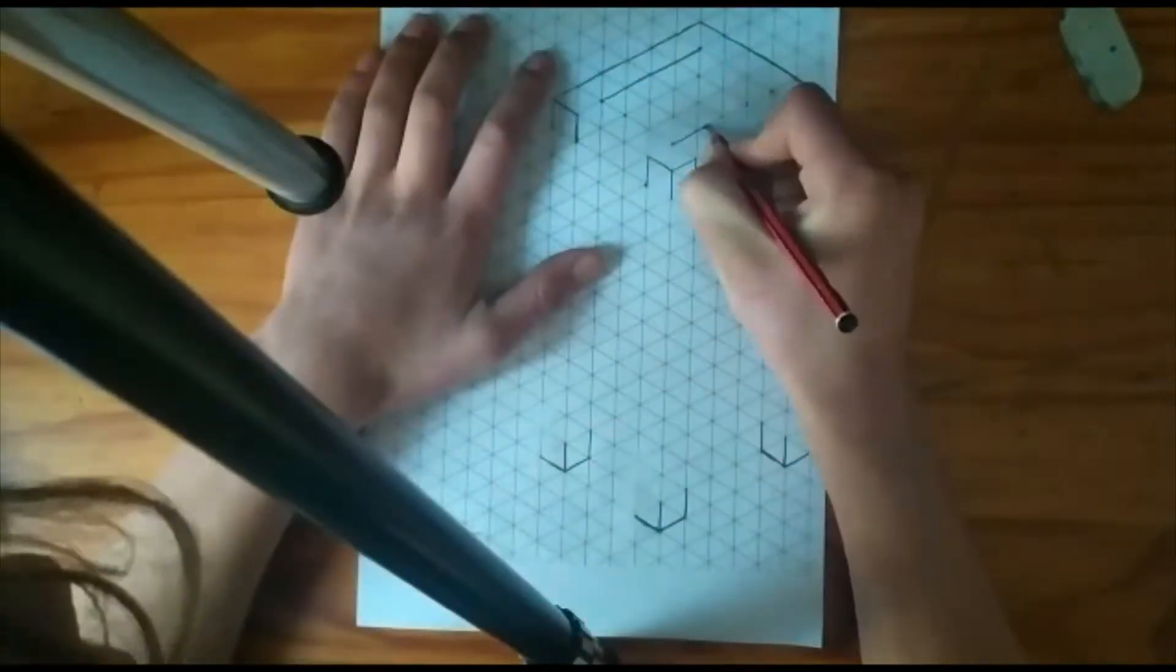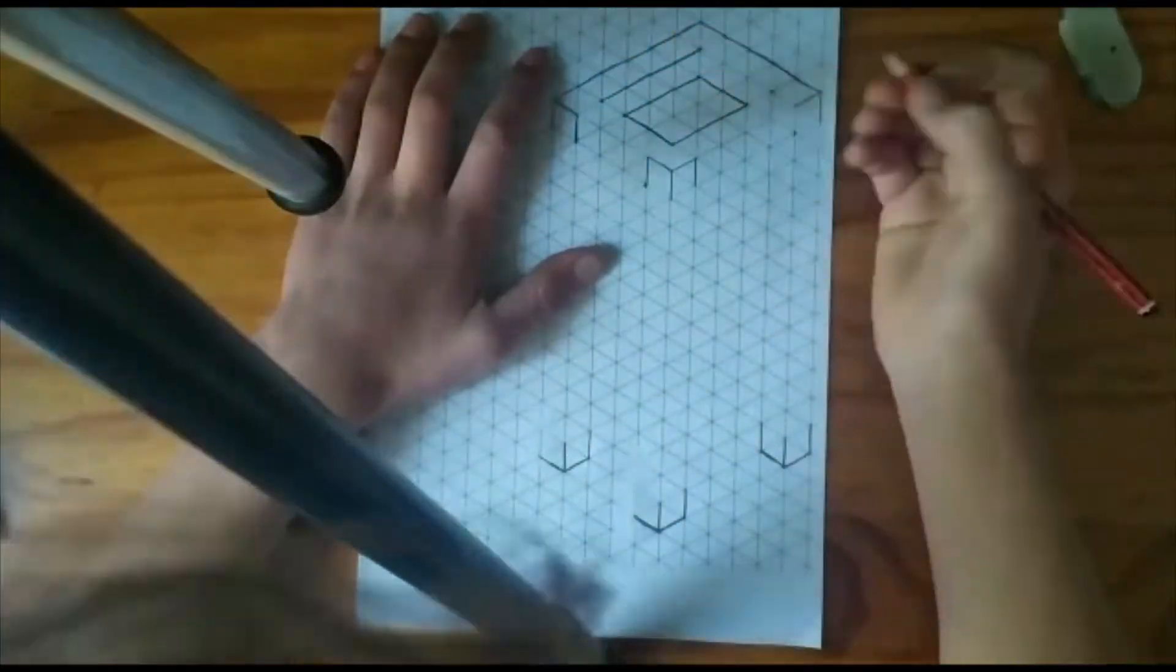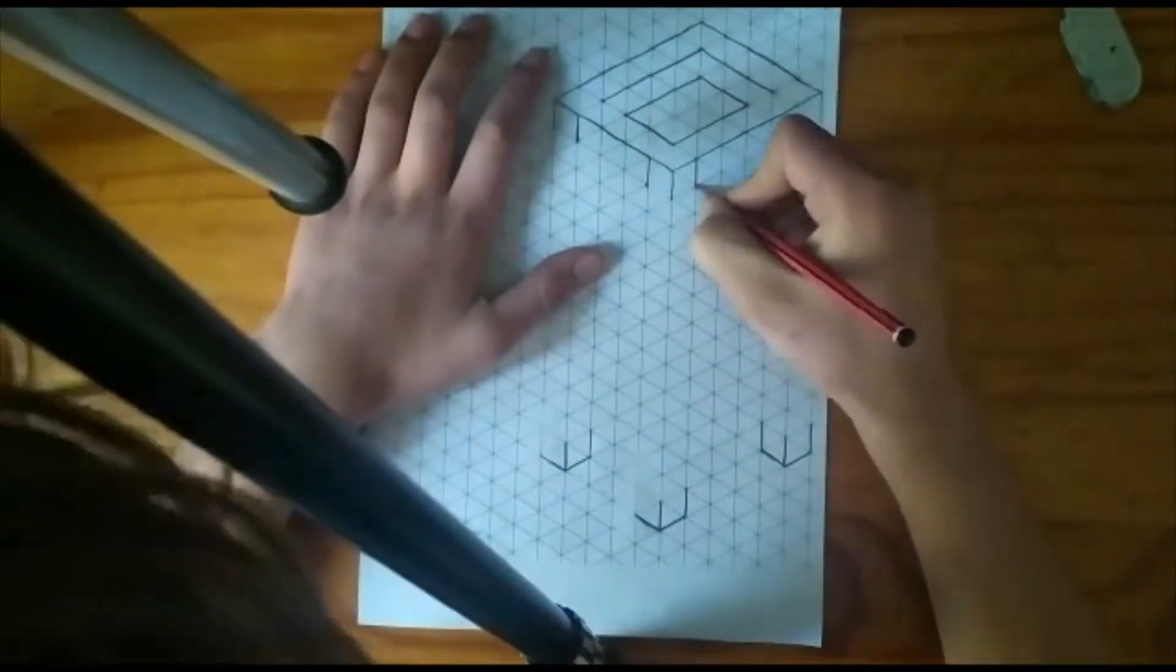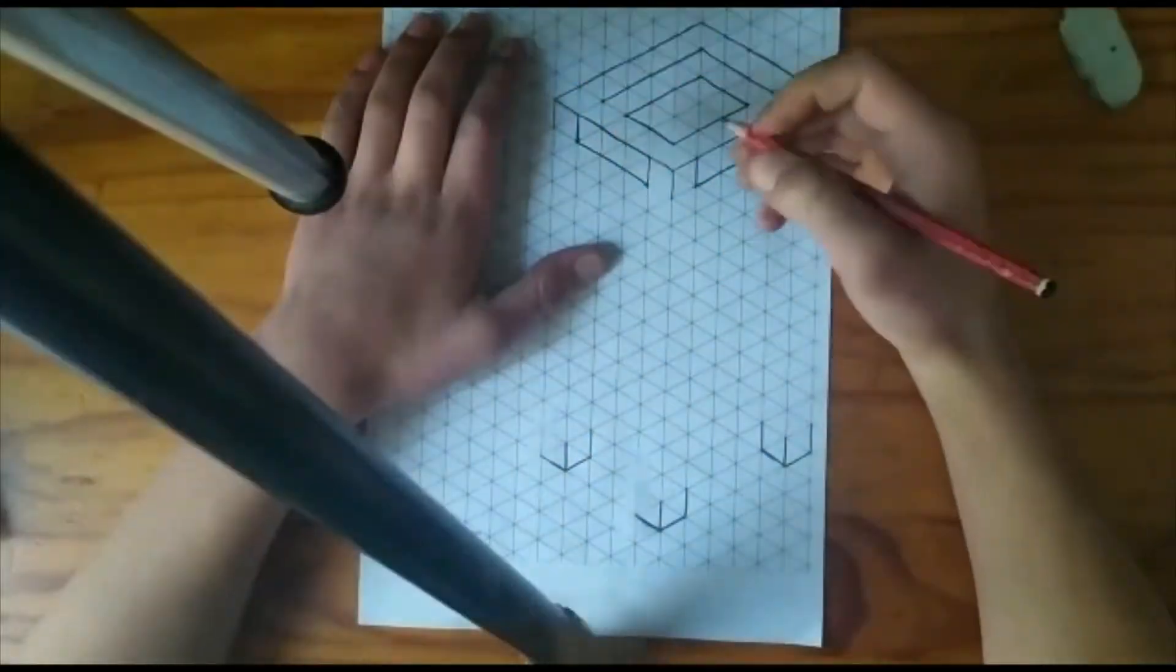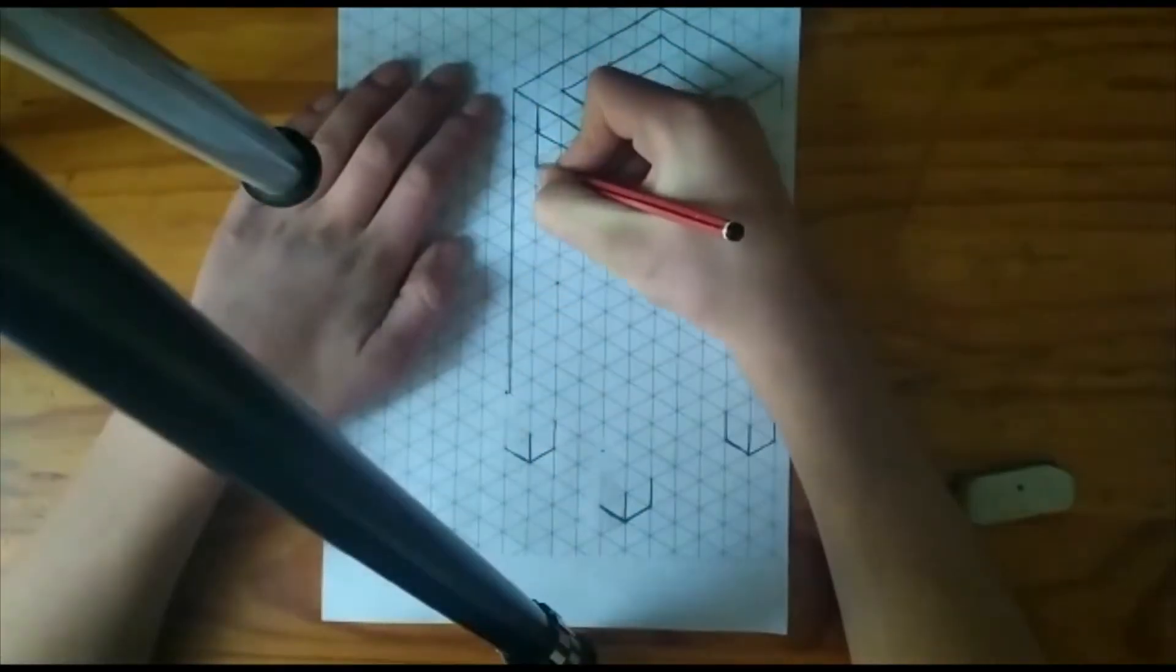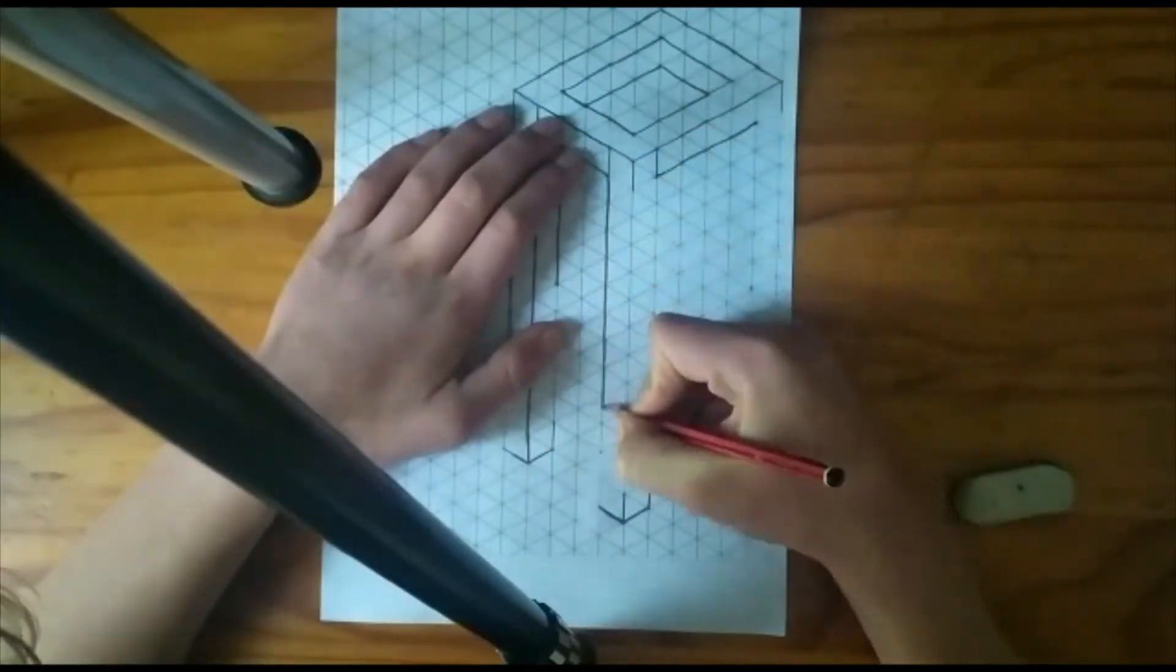Isometric drawing is used to represent an object in three dimensions. If you are a beginner at this drawing technique, using isometric graph paper will help you out a lot, because the horizontal lines are already at a 30 degree angle. The vertical lines, however, will not change.